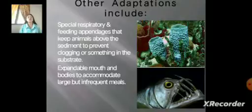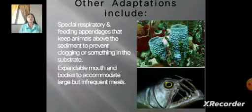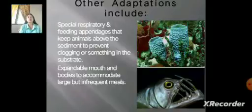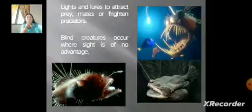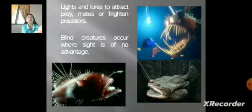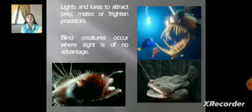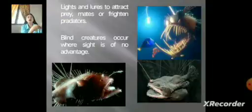Other adaptations include special respiratory and feeding appendages that keep animals above the sediment to prevent clogging in the substrate, and expandable mouths and bodies to accommodate large but infrequent meals. Some organisms produce light to attract prey or frighten predators. There are also blind creatures in the benthic zone where sight is of no advantage.